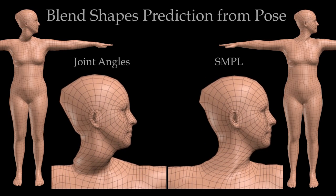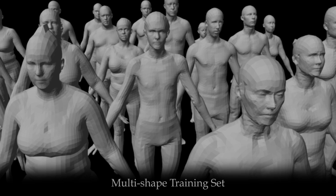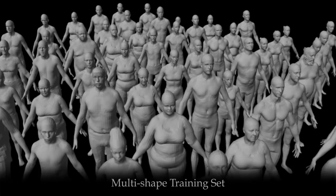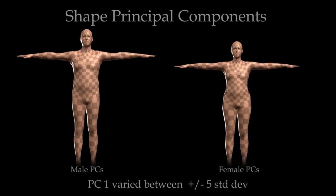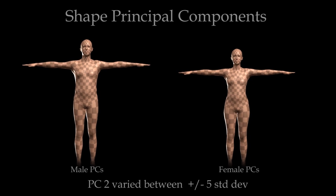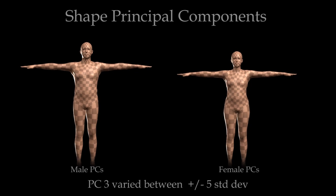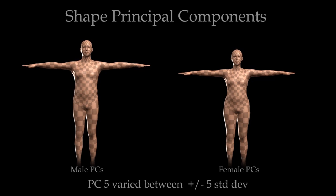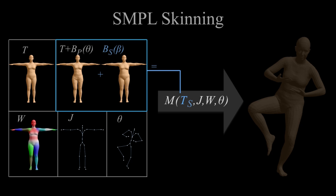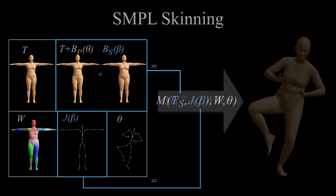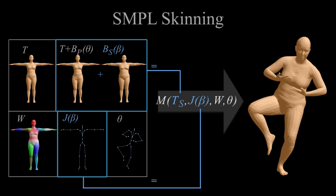We learn shape blend shapes from approximately 4,000 body scans from the US and European CAESAR datasets. Our formulation estimates the pose of these scans, effectively factoring out pose variation from the body shape model. We estimate an average template shape and use principal component analysis to estimate the directions of maximum shape variation — these are our shape blend shapes. Here we show the first few principal components of male and female body shape. The shape blend shapes are linearly combined and weighted by the shape coefficients beta, producing offsets that when added to the base template give a new body shape. The joint locations are predicted from this body shape, and once all blend shapes are summed to produce a deformed body shape, the skinning equation is applied.